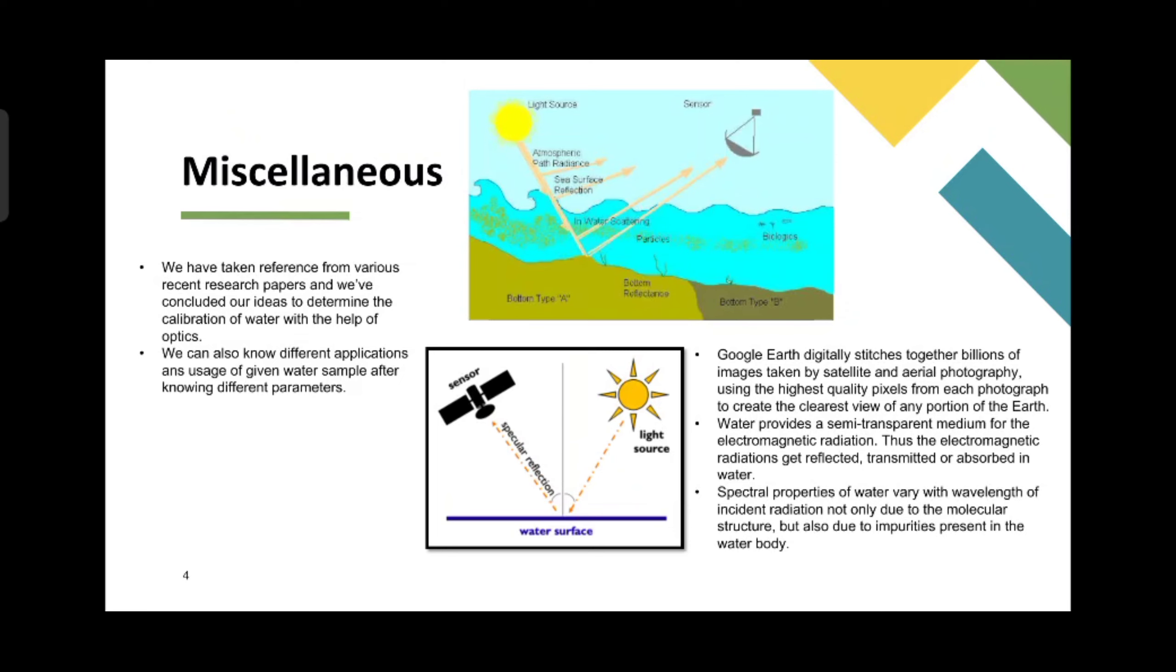Water provides a semi-transparent medium for electromagnetic radiation thus the electromagnetic radiation gets reflected, transmitted or absorbed in water. The spectral properties of water vary with different wavelengths and incident radiation not only due to the molecular structure but also due to the impurities present in the water body.